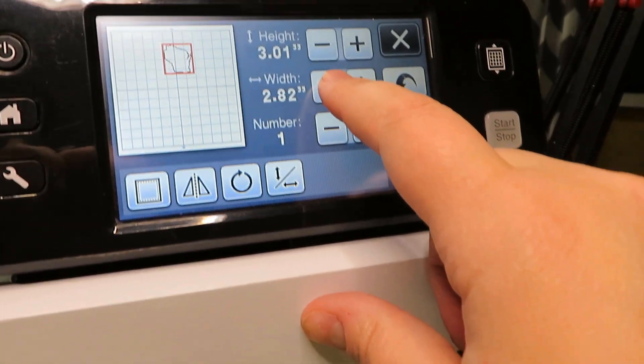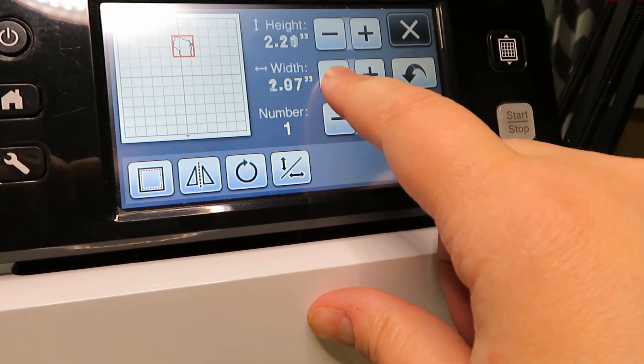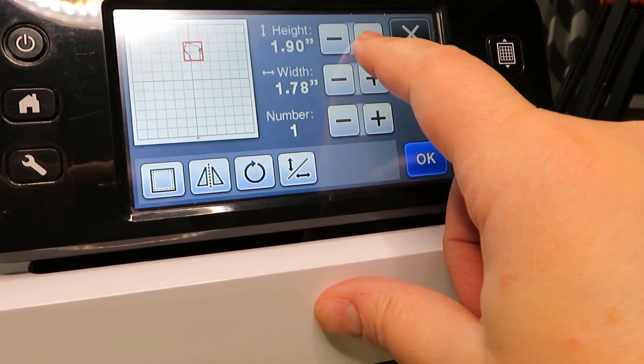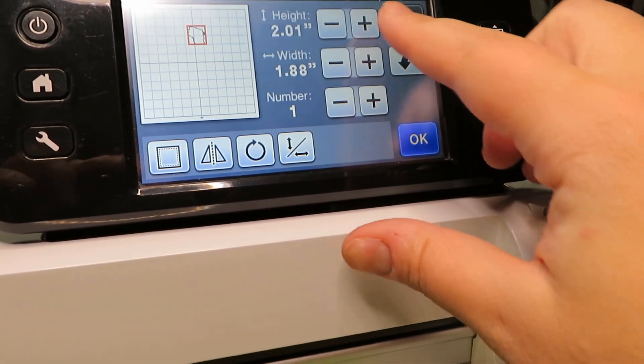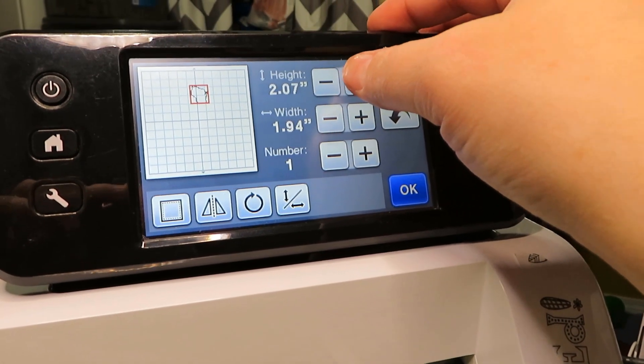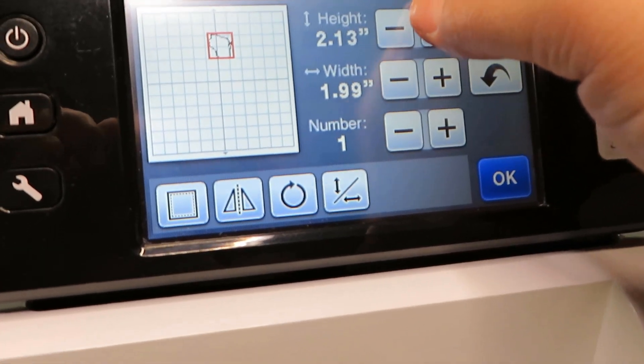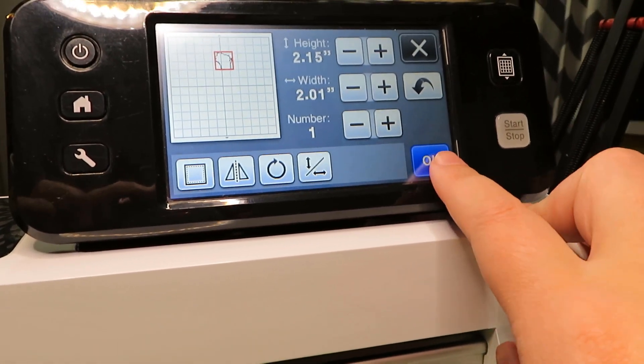Then I can put an entire 12 by 12 page together of this. Now I want to make sure that it's still big enough that I could write a price on it, or again if you're gonna use it as a Christmas tag, you could cut out a snowflake shape, a Santa shape, an outline of a stocking, a star, anything like that, and then just write to and from, etc.